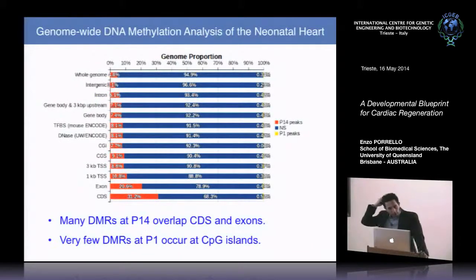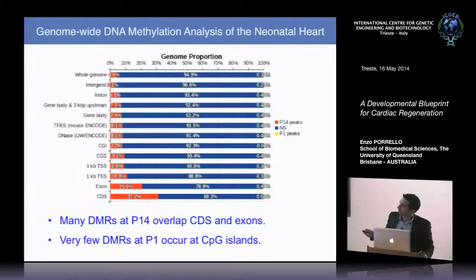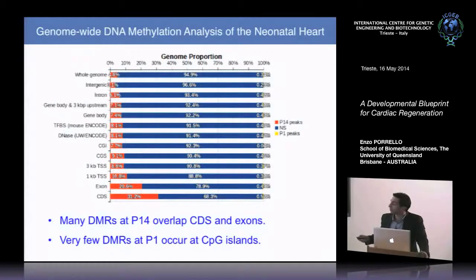Examining the genomic distribution of these methylation events, the vast majority of differentially methylated regions occur at P14. Surprisingly, most occur across gene bodies at exons and coding sequences rather than at promoters and transcription start sites. Many differentially methylated regions at P14 overlap coding sequences and exons, while very few P1 differentially methylated regions occurred at CpG islands — less than 0.02%.